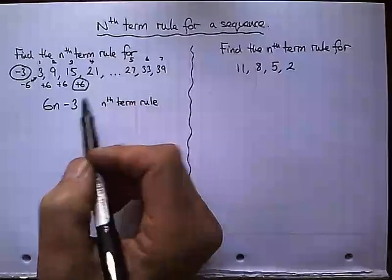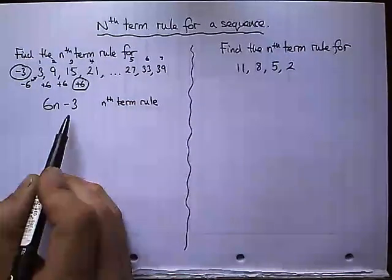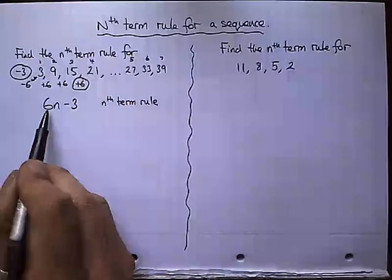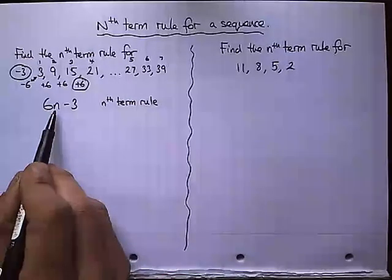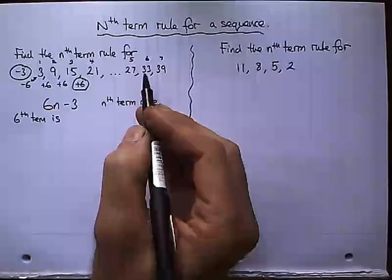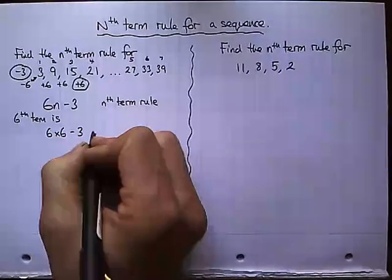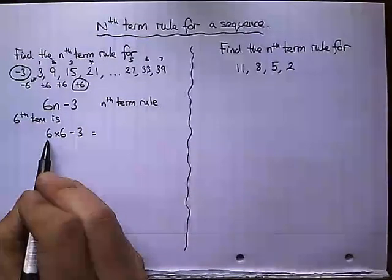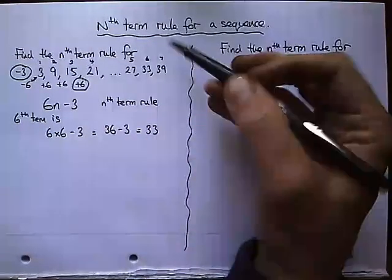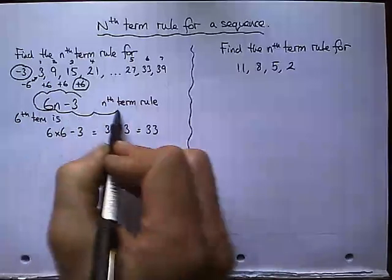Now, if I just wanted to work out one of these terms, let's say I wanted to work out this sixth term. I know it's 33. But I could use this sequence, this nth term rule to work out this 33 in this sequence. So I take 6 and I take the rule. And instead of having n here, I do 6 lots of 6. So the sixth term is 6 times 6 take away 3. Now let's just see whether that is 33. 6 times 6 is 36. 36 take off 3 is 33. So yes, using this rule, I've worked out that the sixth term is 33.